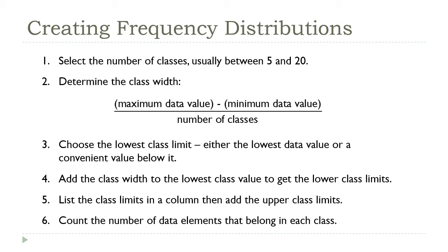But if you go too large, you'll have a bunch of classes that'll have just one or two. So usually something between 5 and 20 is going to be reasonable.